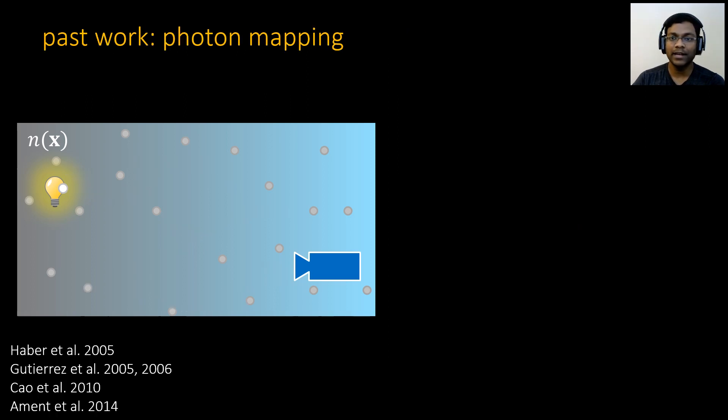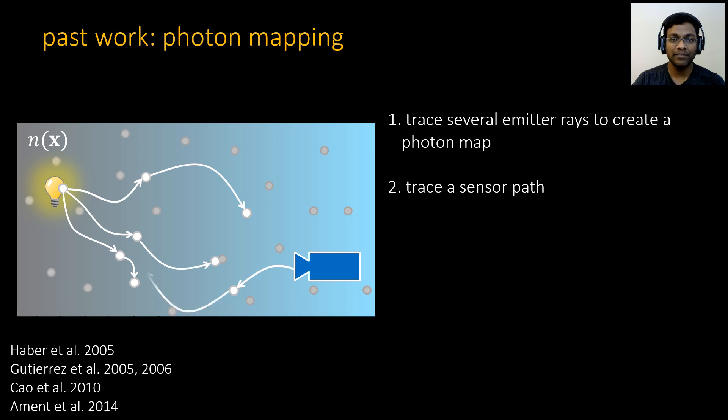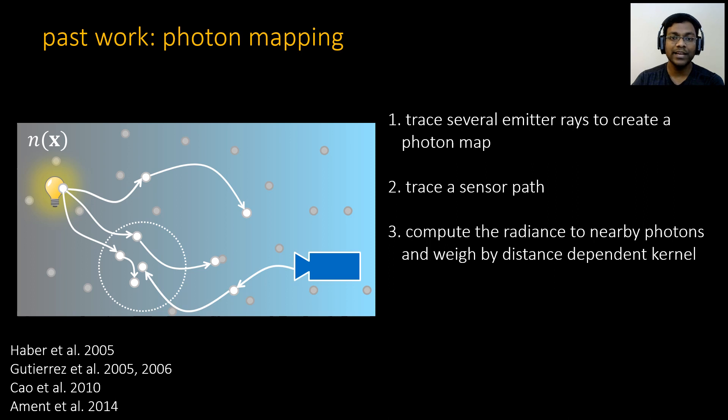The solution is to avoid direct connections and use techniques such as photon mapping. In fact, that was the focus of most past work on rendering the RRTE. In photon mapping, we first trace several emitter rays to create a photon map. For every sensor ray we trace, photon mapping computes the radiance by weighing the contribution of nearby photons with a distance-dependent kernel. This way, photon mapping avoids direct connections. However, photon mapping causes bias, is typically slower, and requires hyperparameter tuning.